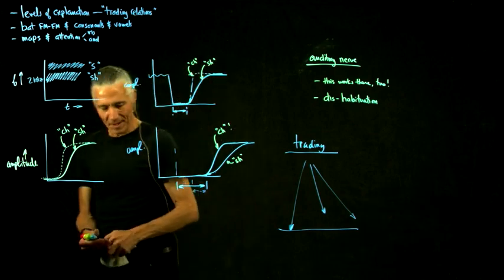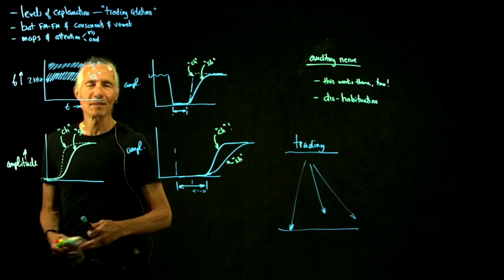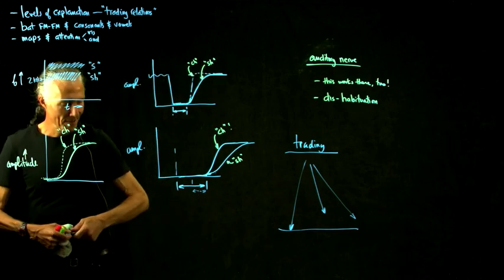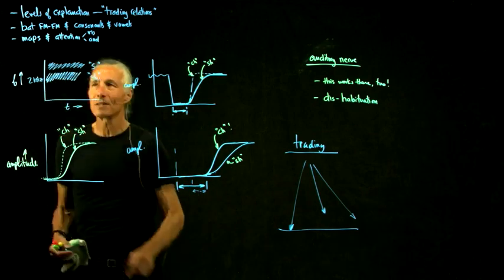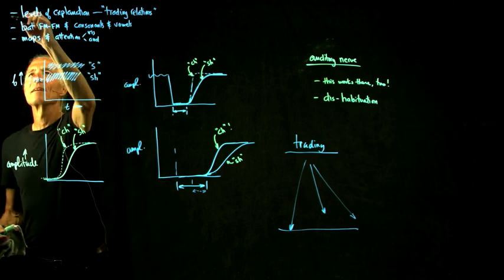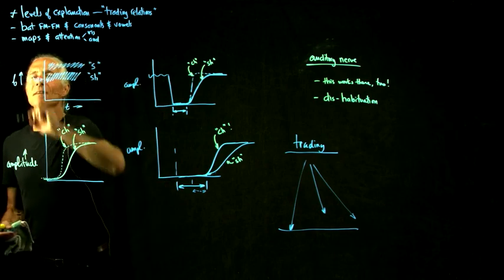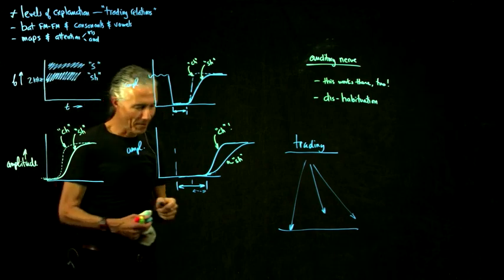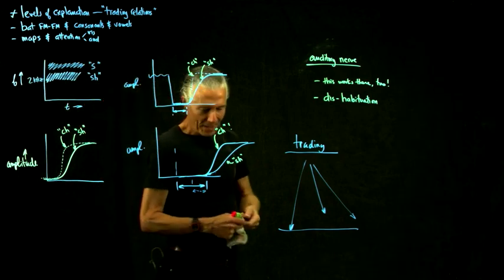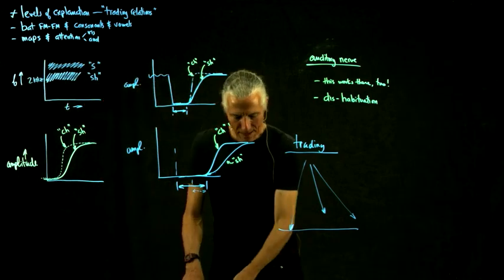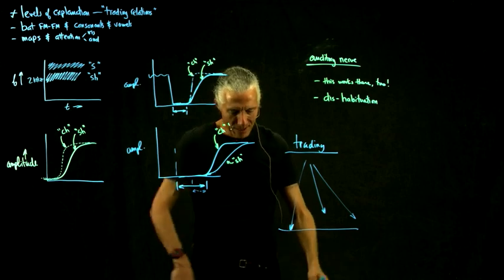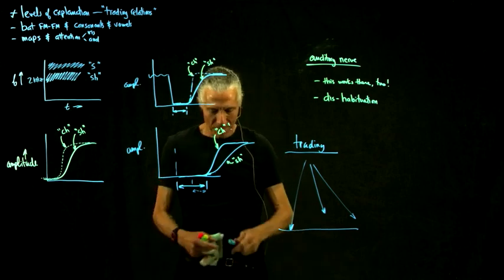The bottom line isn't that there are no higher level processes — the bottom line is to have an open mind about where these things are going on. This thing is already happening in the auditory nerve. It looks like a cognitive phenomenon related to a language-specific mode, but it's not. Other trading relations are implemented somewhere else. So a high-level concept like trading relations can devolve into multiple different mechanisms at the lower level — that's the cautionary tale.